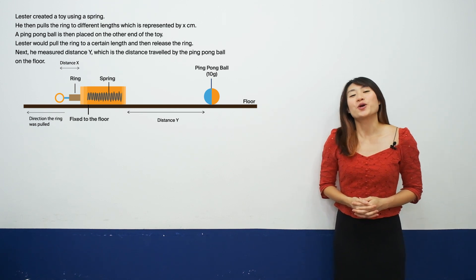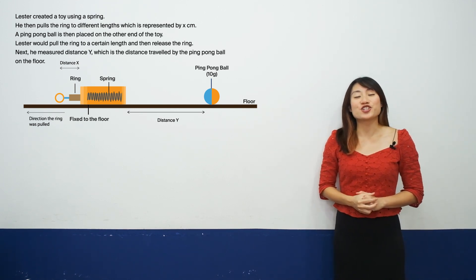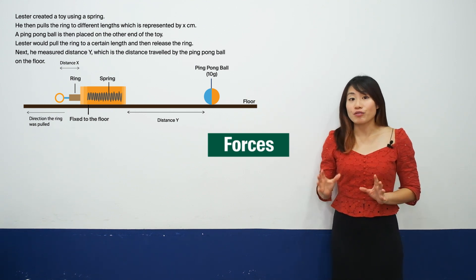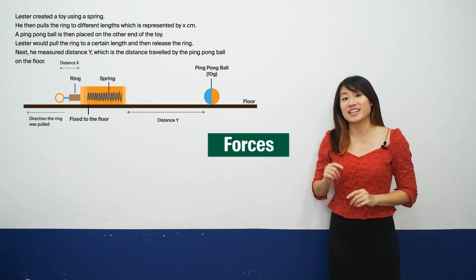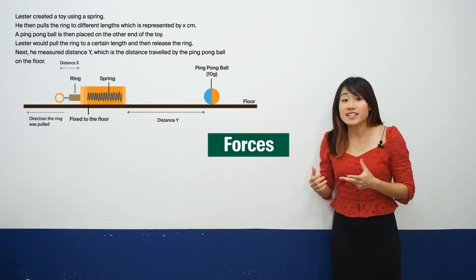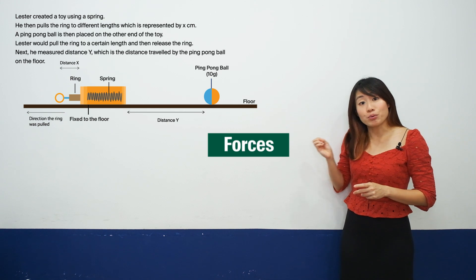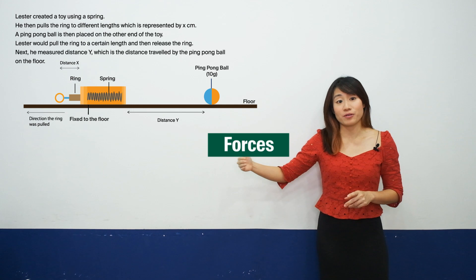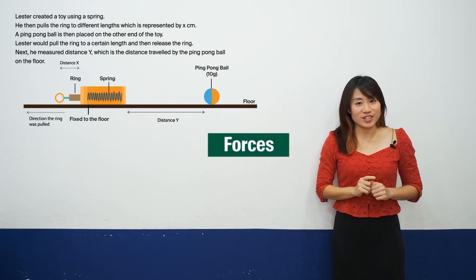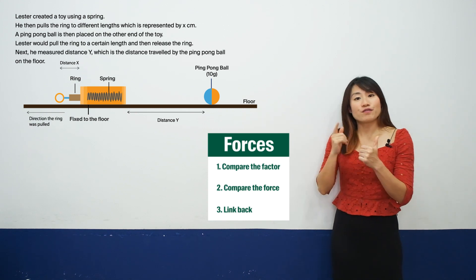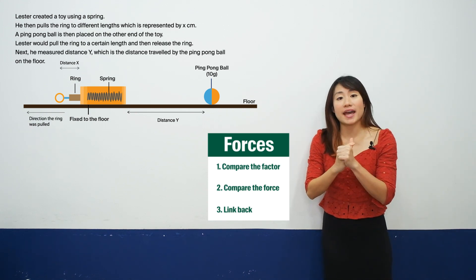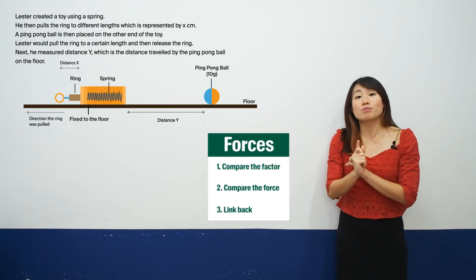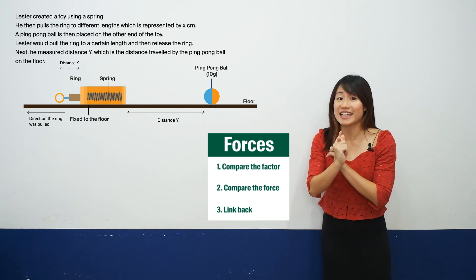Now for the explanation, we can take two approaches, energy and forces. Let's explain using forces first. We know that there is elastic spring force acting on the spring when it is compressed. So when the ring is released, the spring would exert a push force on the ball causing the ball to travel a distance on the ground. Now comes the answering technique for forces. As you can see in this box, the first step is to compare the factor. Second step, compare the force and finally you need to make sure you have answered the question which is linking back.